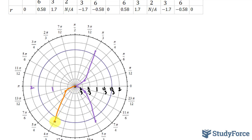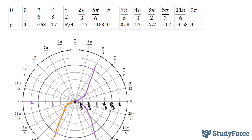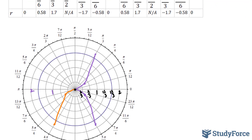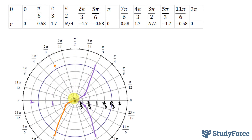At 3π/2 we have no output. At 5π/3, which is in the fourth quadrant, we have negative 1.7, so that will be over here. Lastly, we have 11π/6 at negative 0.58; following along this line, we get a point right here that should be the mirror image of this point. Connecting this, we end up with what appears to look like a spider.